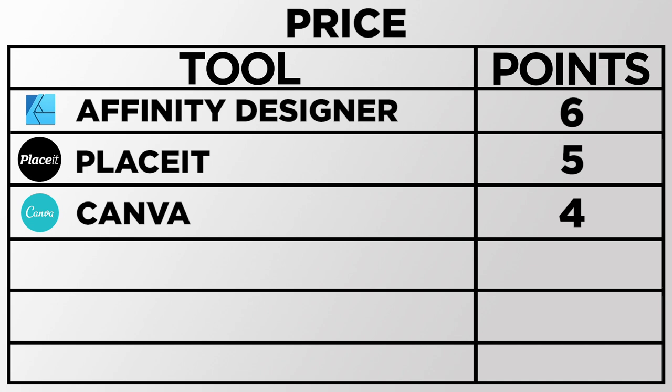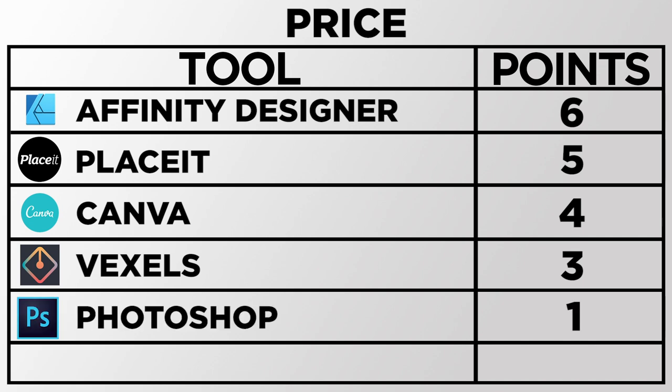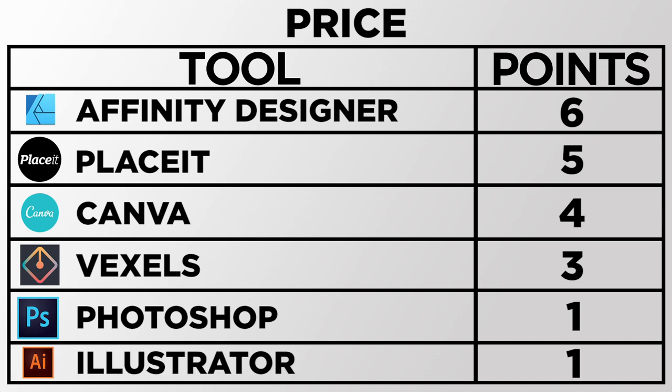Canva comes in third with four points at $12.95 a month for five users — so if you can find some friends, you can split it quite well. Vexels comes in fourth with three points at $22 a month. Photoshop gets one point at $20.99 a month, and Illustrator also one point at $20.99. You can purchase a Photoshop and Lightroom bundle for $9.99, which is a lot cheaper even if you never use Lightroom.